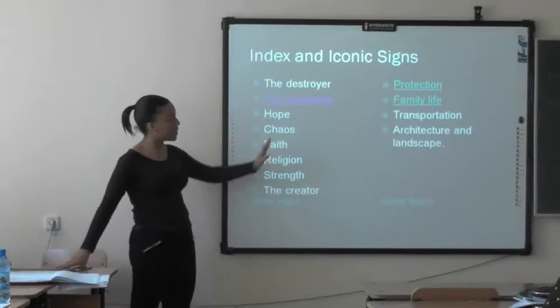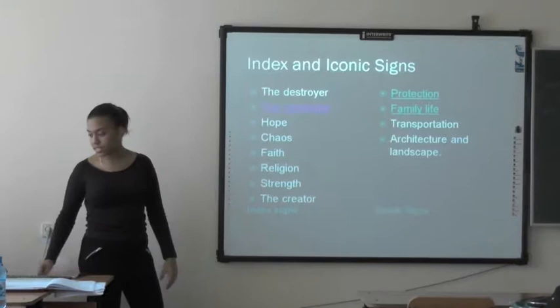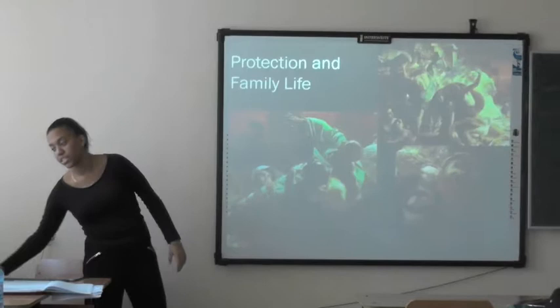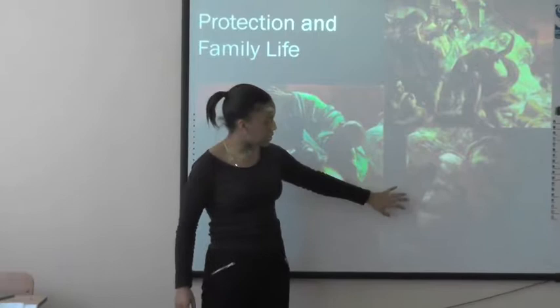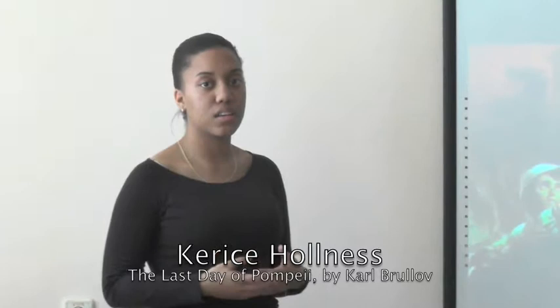The iconic signs include protection, family life, transportation, architecture, and landscape. Focusing on protection and family life, we see children carrying their father. This also presents Romanticism, specifically in Russian art. The artist is a Russian artist who went to Rome and created this piece, giving birth to a new era of art in Russia and Rome, and showing the social similarities between both states.